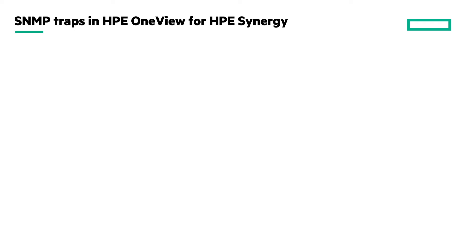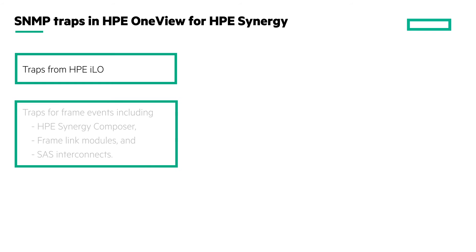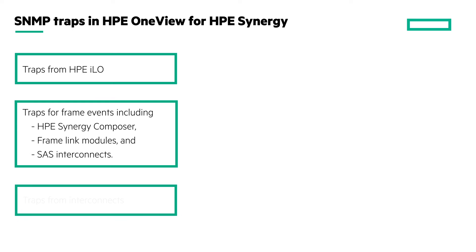To summarize, you can receive SNMP traps from HPE iLO, for HPE Synergy Frame events including Composer, Framelink Modules, SAS Interconnects, and also traps from the interconnects.